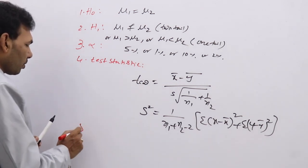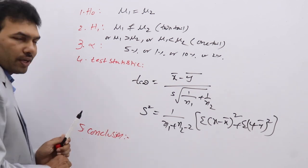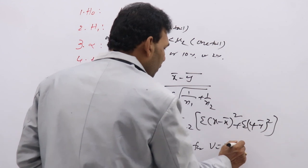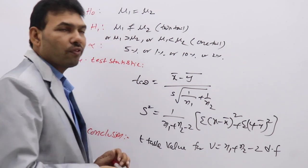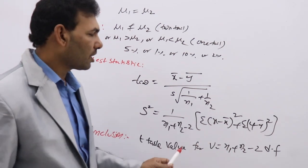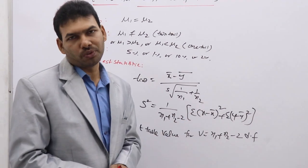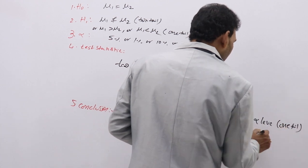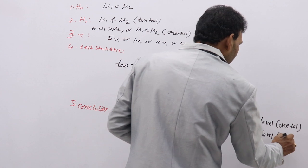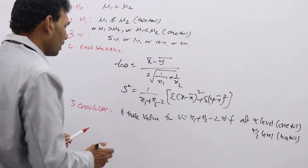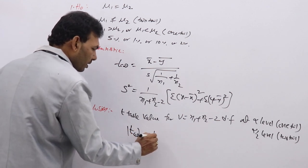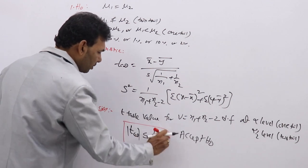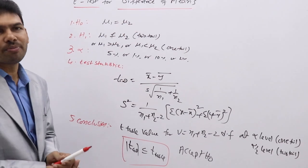Next, coming to the fifth stage — the conclusion stage — you need to find the T table value. T table value is looked up at degrees of freedom V = N1 + N2 − 2. For example, if N1 is 10 and N2 is 7, degrees of freedom = 10 + 7 − 2 = 15. Use alpha level for a one-tailed test, or alpha/2 for a two-tailed test. If T calculated ≤ |T table|, accept H0; otherwise reject H0. This is the testing procedure for difference of means in small samples.